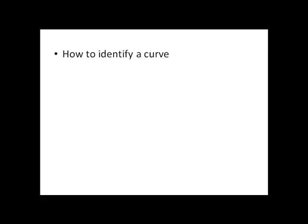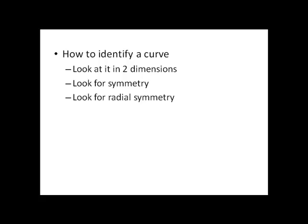So let's talk about first how to identify a curve. There's some stuff we want to look at in order to figure out what it might be. One trick is to look at it in two dimensions. We could also look for any symmetry present in the equation that we would expect to see in the graph. We could also look for something called radial symmetry.